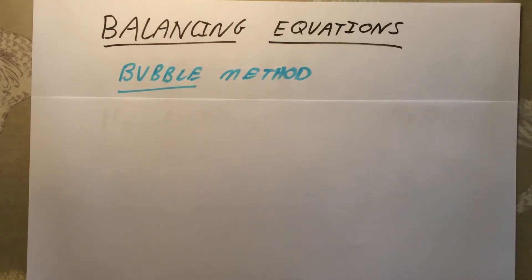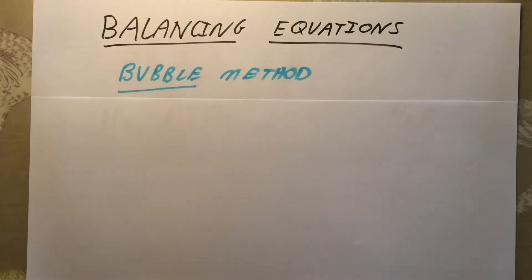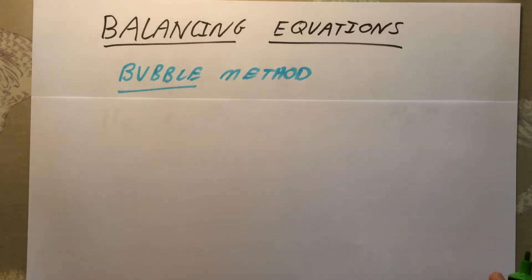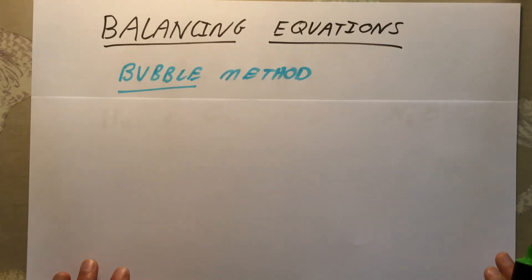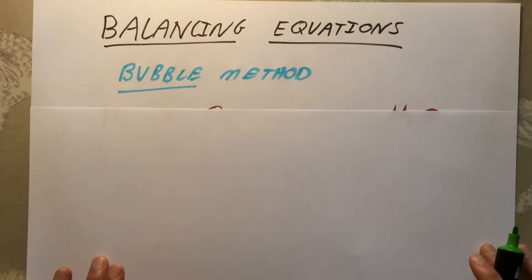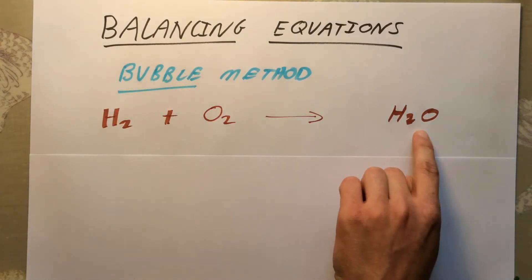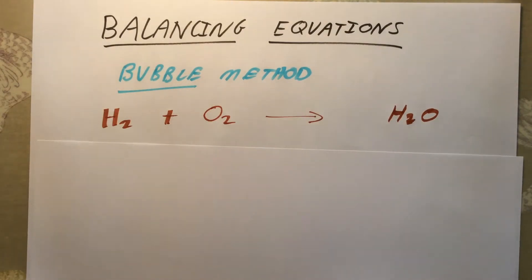The reason it's called the bubble method is because we're going to represent all the atoms involved in the reaction using bubbles, which will allow us to balance it nice and easily. The first example we're going to look at is the combustion of hydrogen in air to form water. Hydrogen gas is shown as H₂, reacting with oxygen O₂, to form water H₂O.